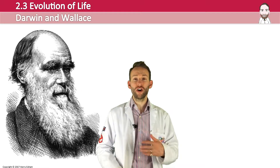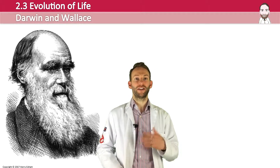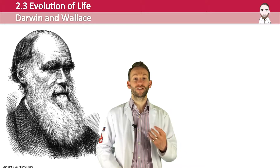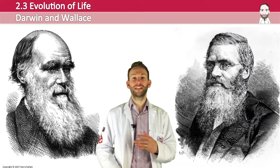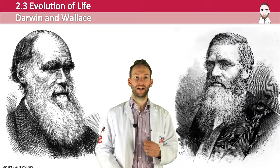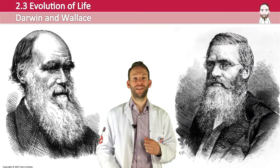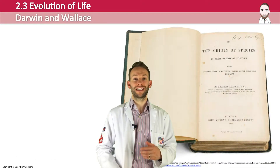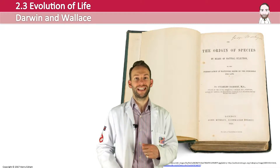Darwin accumulated evidence over a long period of time supporting the idea that living organisms could change with time. He got this evidence from his various voyages — places like the Galapagos Islands — from geological evidence, fossil evidence, and his own experiments. Wallace accumulated evidence from the Amazon and the Malay Archipelago. Darwin ultimately received more fame as he had a bigger body of evidence and a deeper development of natural selection, which he outlined in his famous book 'On the Origin of Species by Means of Natural Selection,' first published in 1859.